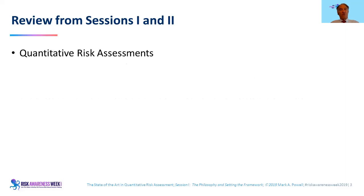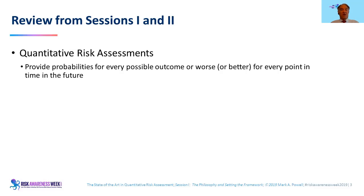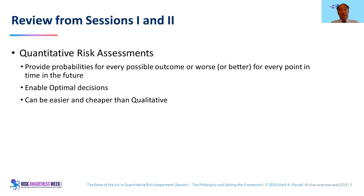A state-of-the-art quantitative risk assessment provides probabilities for every known outcome — or worse, or better — for every possible outcome at every point in time in the future of the project. Once we have all those probabilities for every possible outcome at every time, we can literally find the optimal decision. Another key point: it can actually be easier and cheaper to perform a state-of-the-art QRA than a qualitative risk assessment.